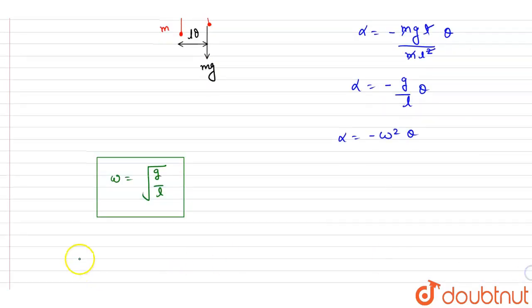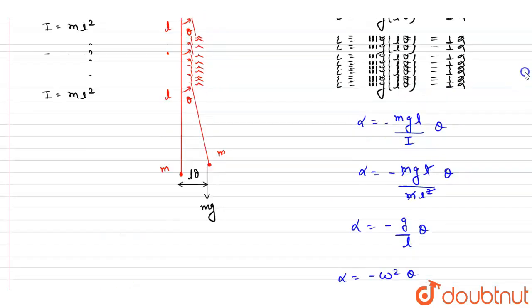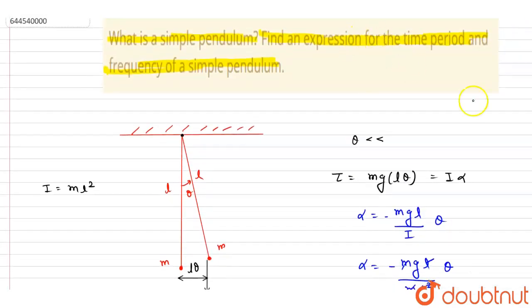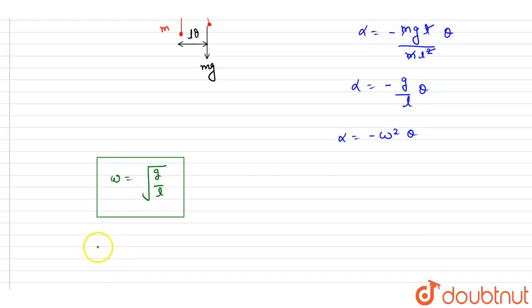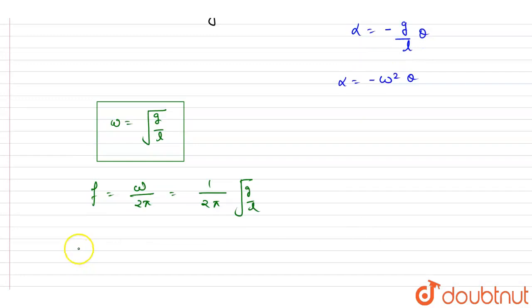If you see, we want the time period and the frequency, so frequency will be simply omega by two pi. So it is one upon two pi under root g by l. And the T is equals to two pi by omega, that is inverse of this, it will be under root of l by g. Simple. So these will be the frequency and time period and answer of this question. Thank you.